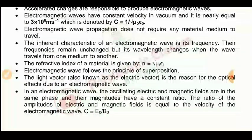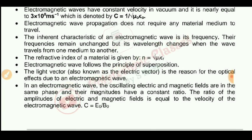Electromagnetic waves do not require any medium to propagate. In general, other waves like sound need a medium such as air. For example, in vacuum we cannot transmit sound, because sound waves do not propagate there. But electromagnetic waves can propagate freely in vacuum — they do not need any medium.